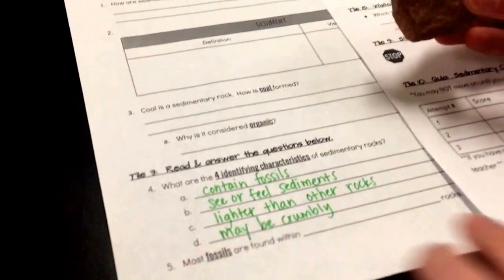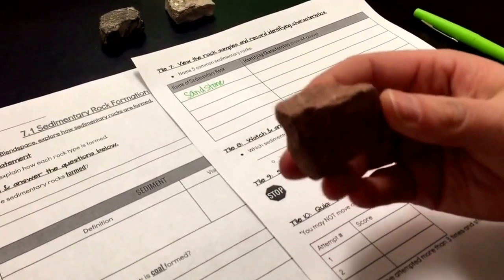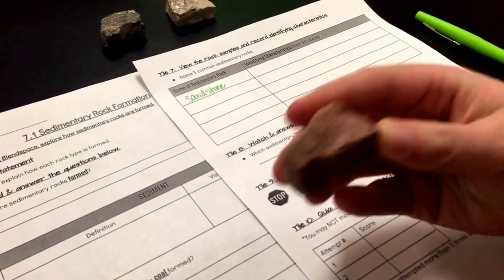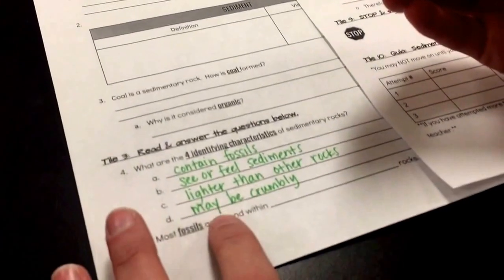So when you think about writing in this box, I don't want you to write, oh well it's red, because that's not going to help me identify it. What's going to help me identify it are these characteristics right here.